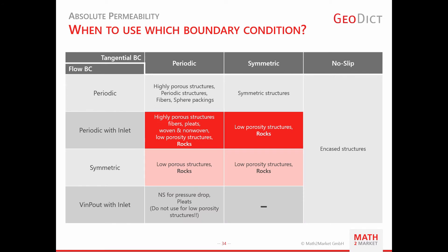When to use which boundary conditions: for rocks, you can use periodic with inlet or symmetric for the flow direction — both are possible. For the tangential boundary orthogonal to the flow direction, you can use either symmetric or periodic. If we use a representative elementary volume, we assume the tangential boundary conditions will not affect our computation in flow direction. There is also the no-slip condition in the tangential direction — use this if you want to re-simulate an experimental setup.